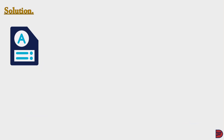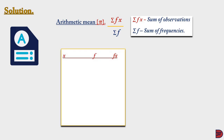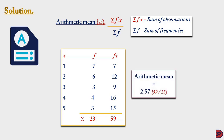For the solution, let's start by calculating the arithmetic mean, since we need it to find the difference between the values and the mean. The formula is the summation of observations divided by the sum of frequency. For 1 order, frequency 7, total frequency (fx) is 7. For 2 orders, frequency 6, fx is 12. For 3 orders, frequency 3, fx is 9. For 4 orders, frequency 4, fx is 16. The sum of frequencies is 23 and sum of fx is 59, giving an arithmetic mean of 2.57.